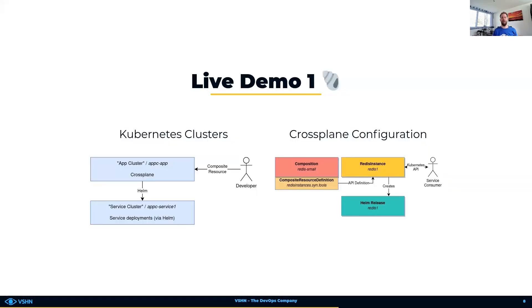Let's see how Crossplane looks like in real life. In this first live demo, we will have a look at various Crossplane-specific Kubernetes objects and provision a Redis service. The left diagram shows the demo Kubernetes clusters in use. The top one is the one we will be looking at — it runs Crossplane and it is the cluster in which we will be deploying Redis. The actual service then runs on the bottom cluster, the service cluster. The provisioning happens via Helm. The right diagram shows the Crossplane objects involved, including a Redis instance XRD and a composition which implements this XRD.